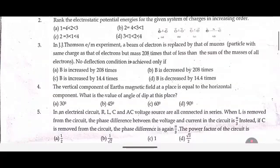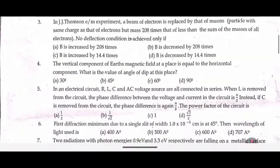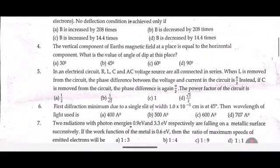Fourth one: The vertical component of Earth's magnetic field at a place is equal to the horizontal component. What is the value of the angle of dip at this place?